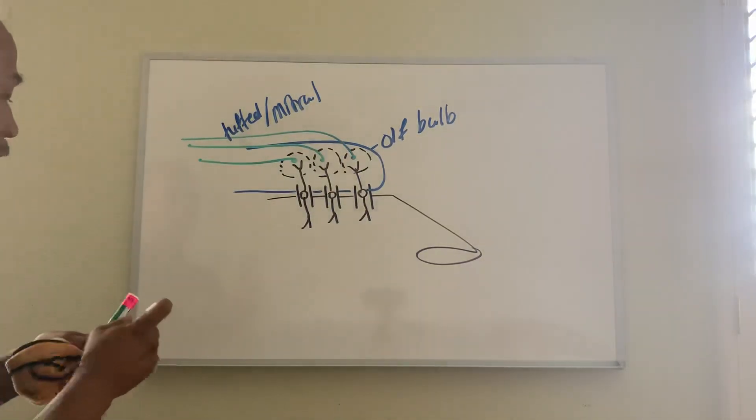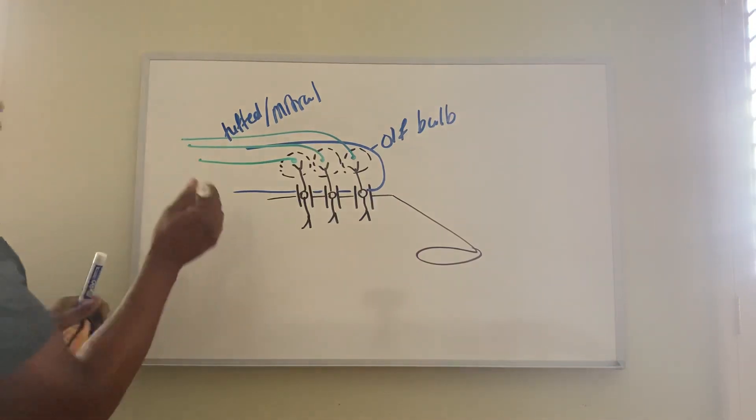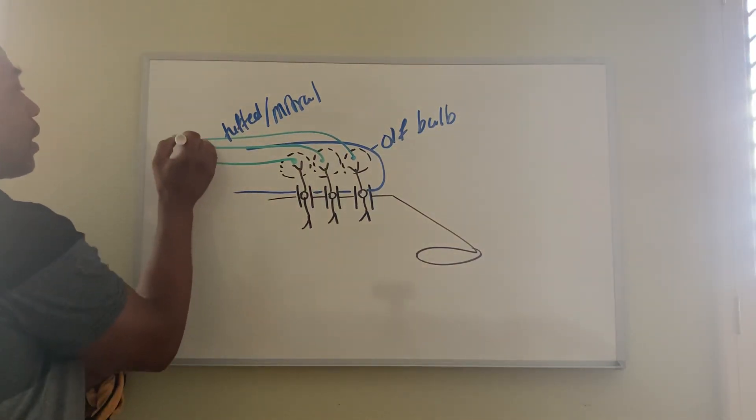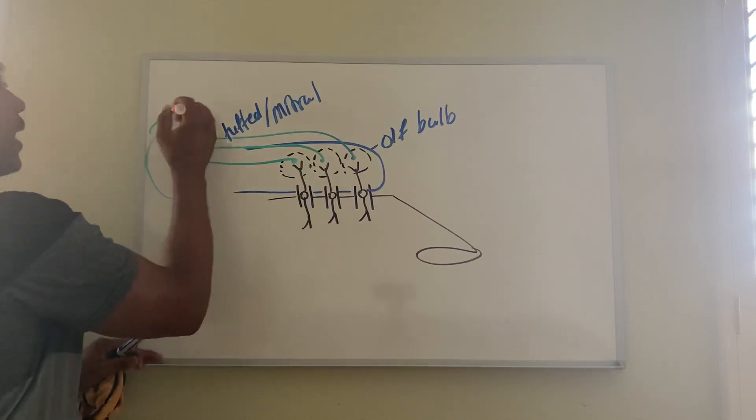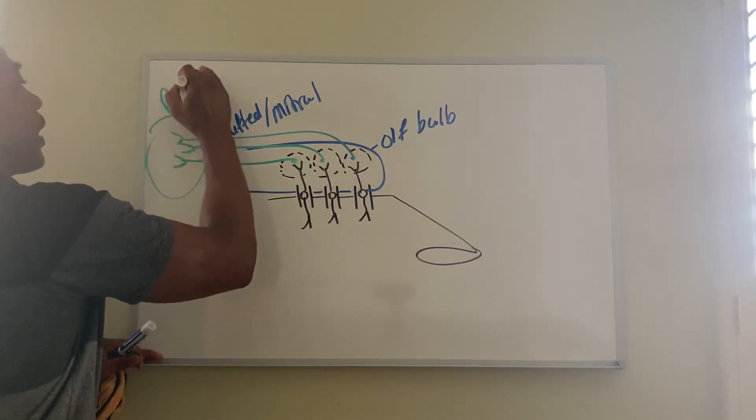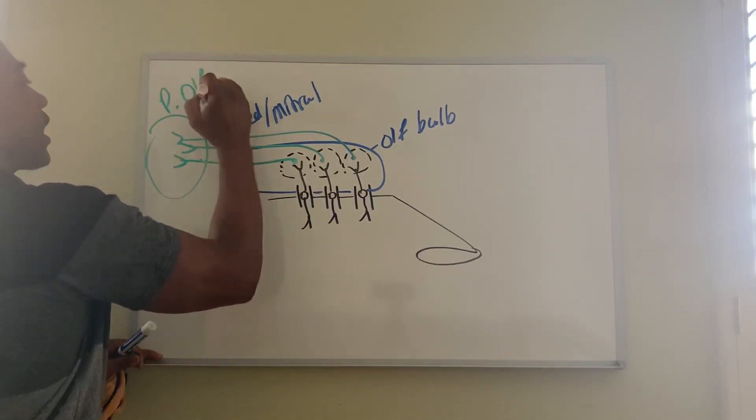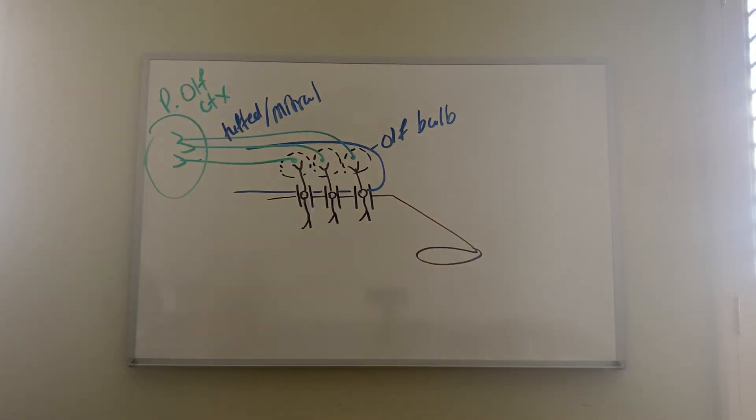And these cells will go back to synapse directly into your primary olfactory cortex, which is in the temporal lobe. So it's really a two neuron pathway in terms of olfaction.